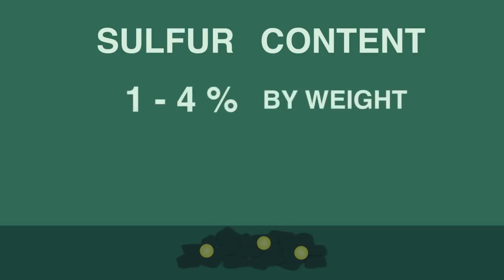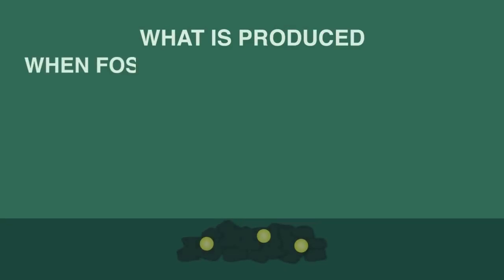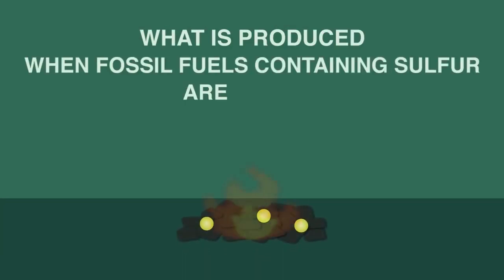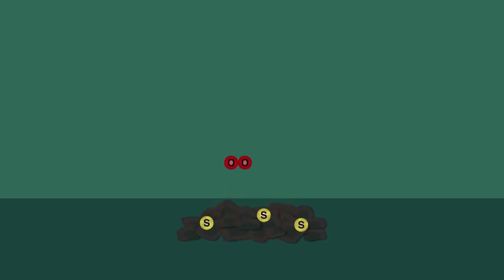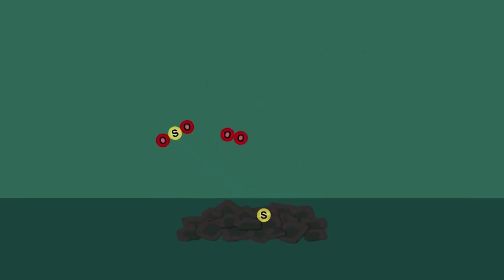The sulfur content of coal and oil is usually between 1 and 4% by weight. What do you think is produced when fossil fuels containing sulfur are burnt? Pause the video whilst you think. When the coal is burnt, the sulfur and the carbon atoms join with oxygen from the air and are released into the atmosphere as carbon dioxide and sulfur dioxide.